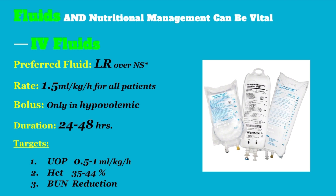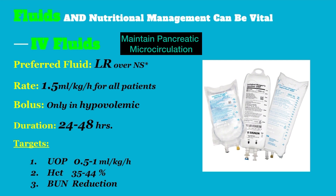The first and most important thing in patients with acute pancreatitis is IV fluids — this is the only proven treatment. When there is acute pancreatitis, it inflames the pancreatic tissue and compromises the microcirculation of the pancreas, potentially cutting off blood supply and increasing the chances of pancreatic necrosis. By providing IV fluids, we maintain microcirculation and prevent necrosis.